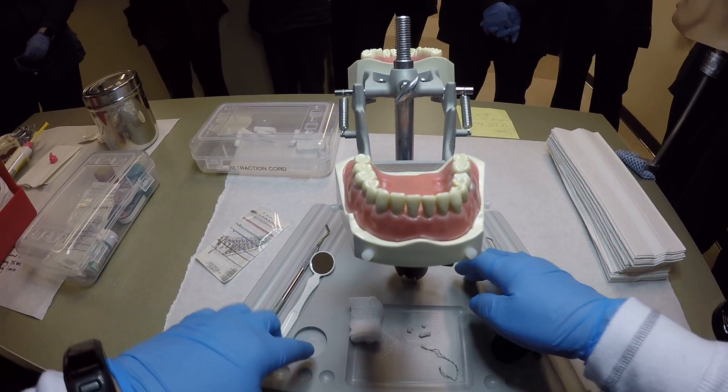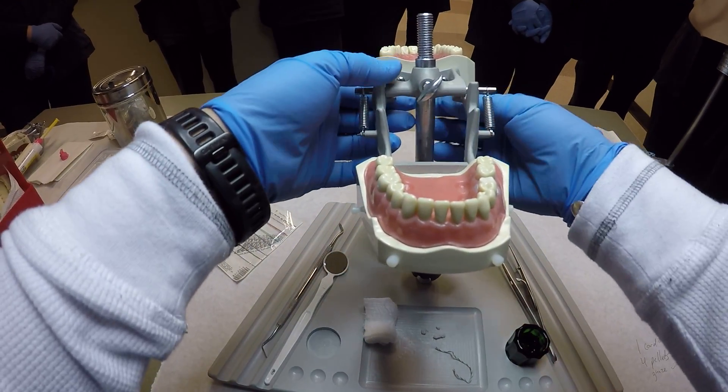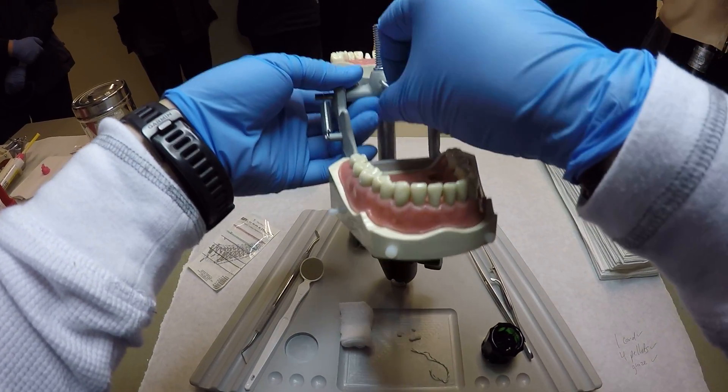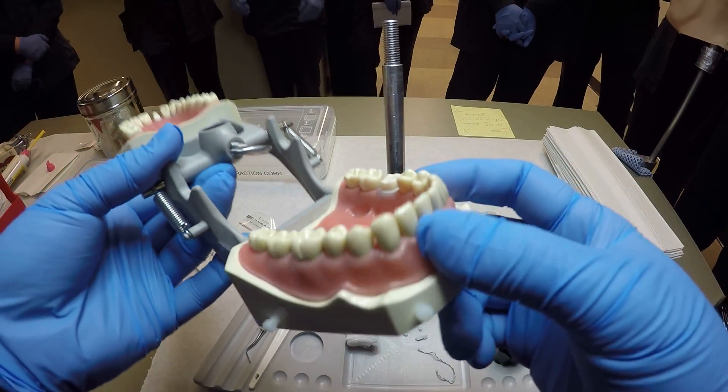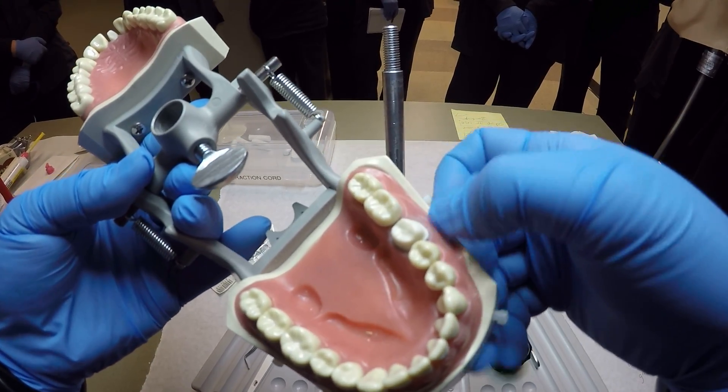First off, the SIM station, the mount here, is where we have our typodont. We're using the rubber typodont with the gingiva that is a type of silicone.